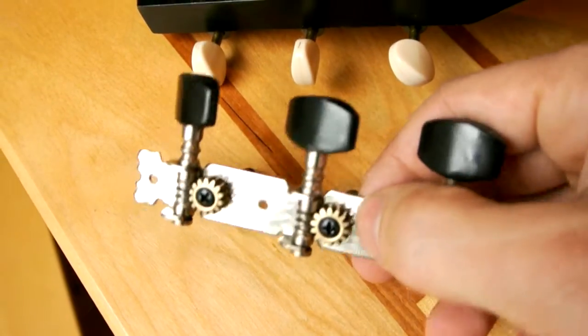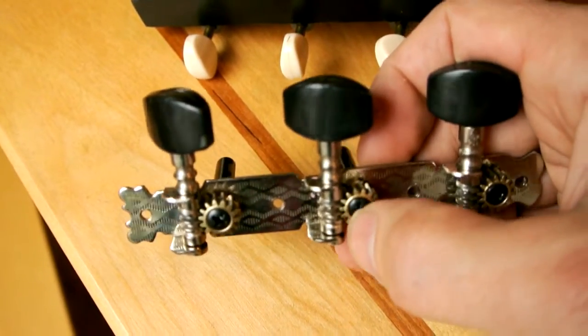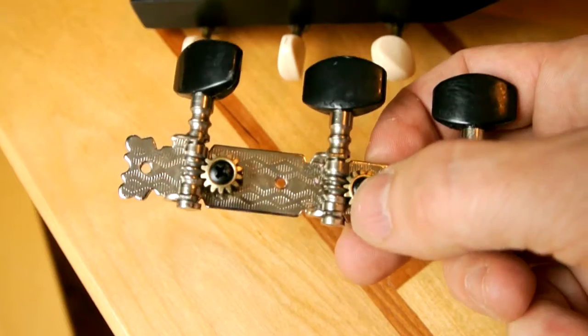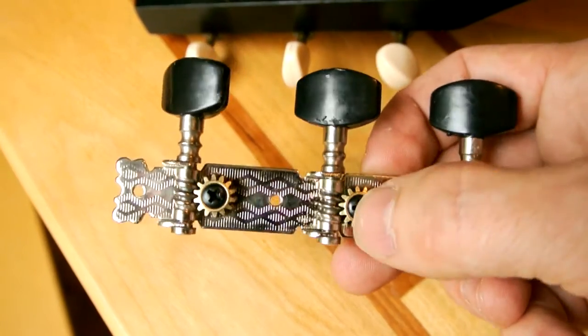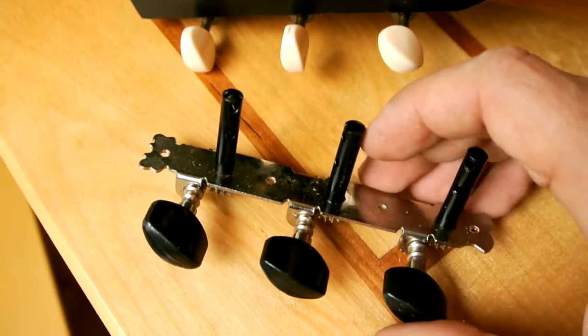So you get all this leverage against the post through the sheet metal here, and also pushing against this little worm gear. Depending on which part of the worm gear you're on, you'll lever this post back and forth, and that makes for very inconsistent tuning.